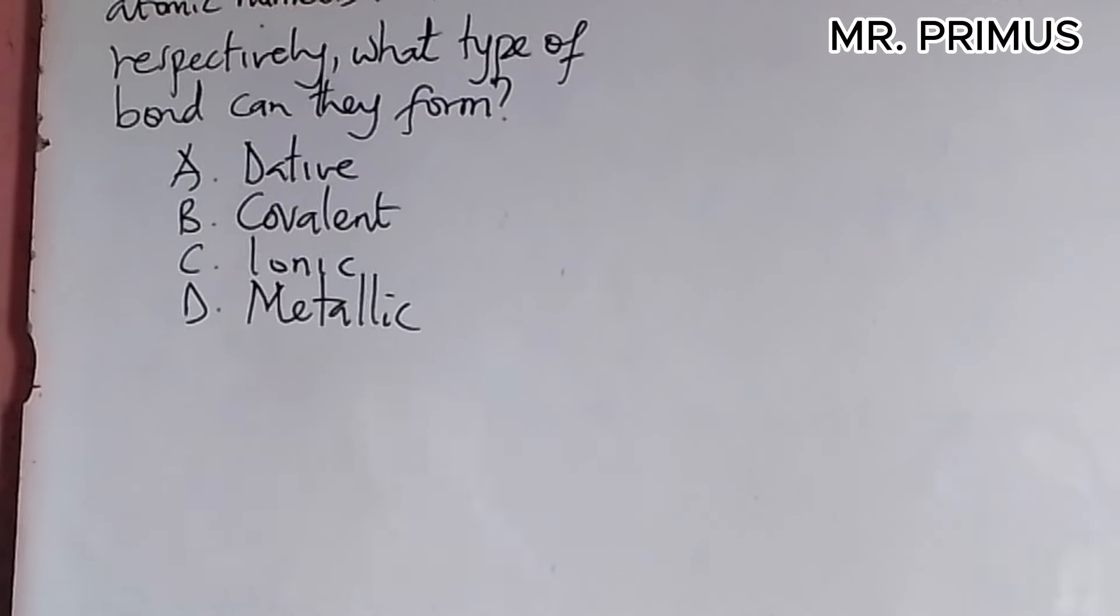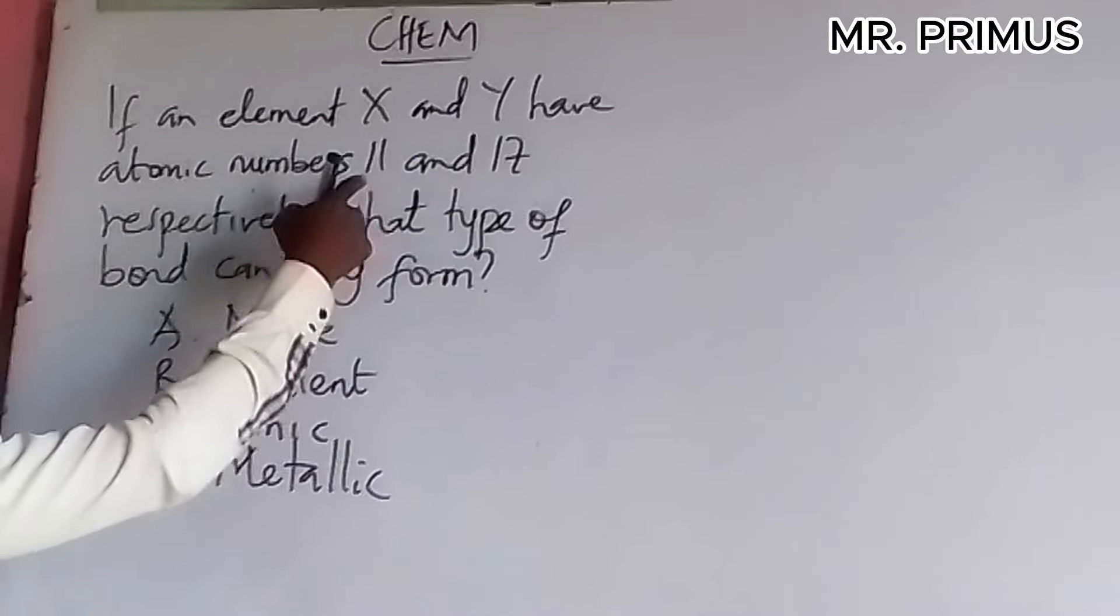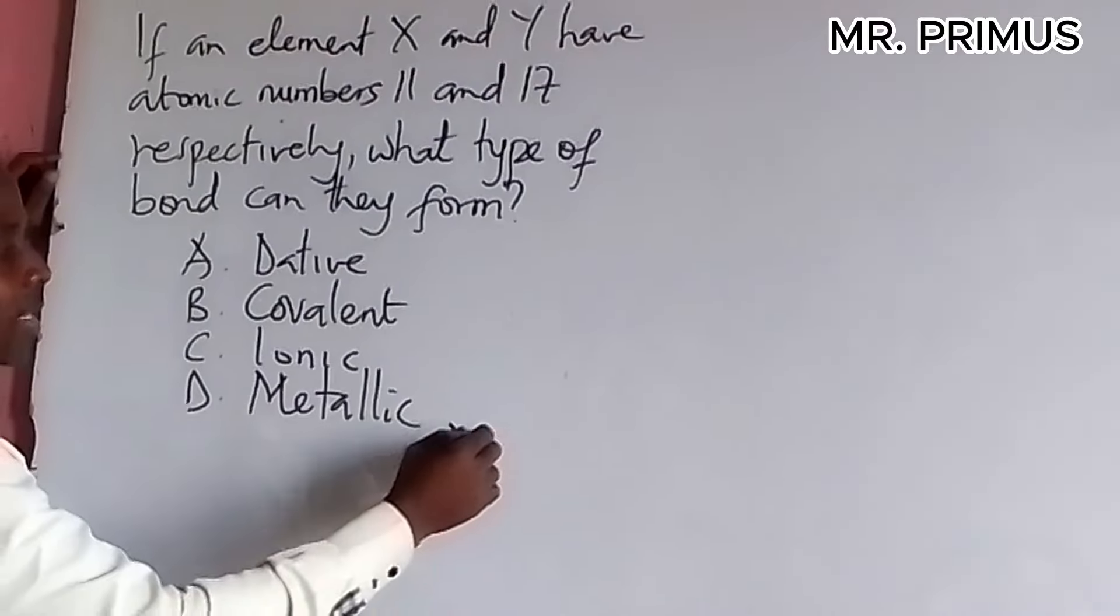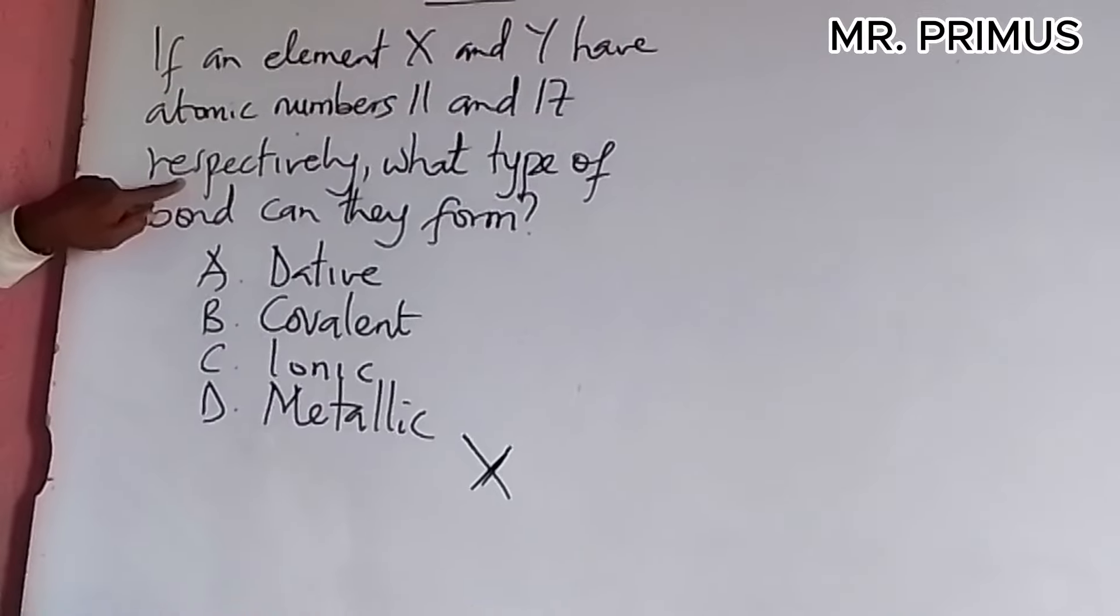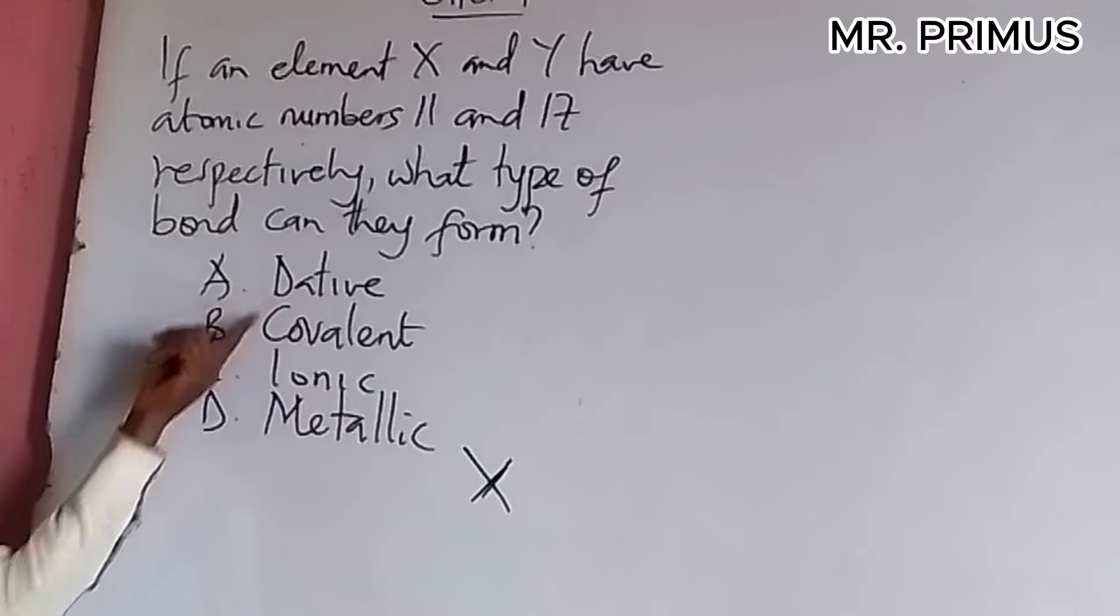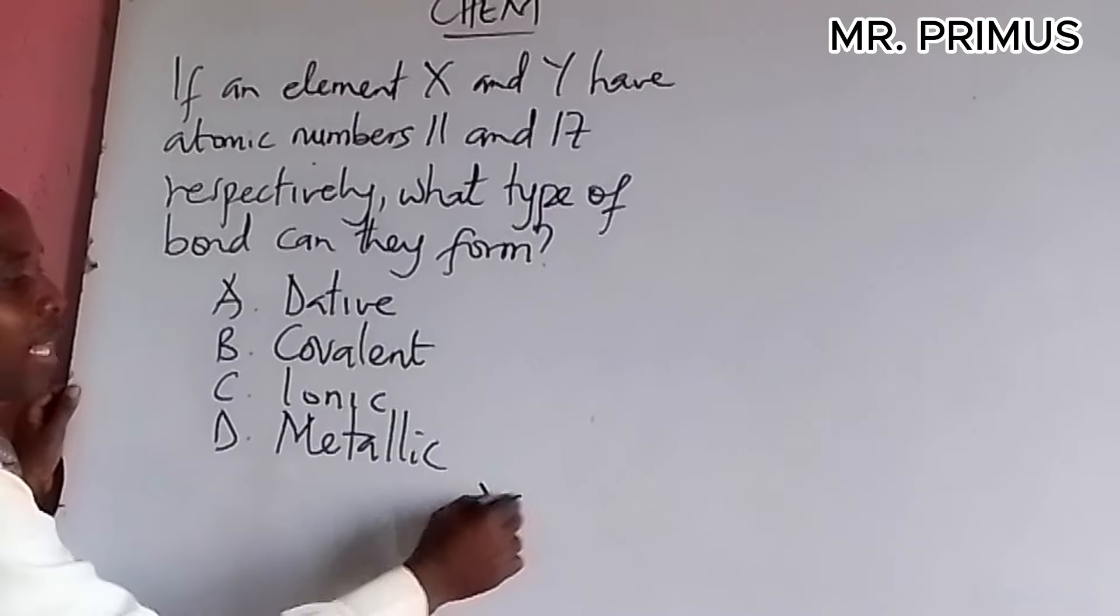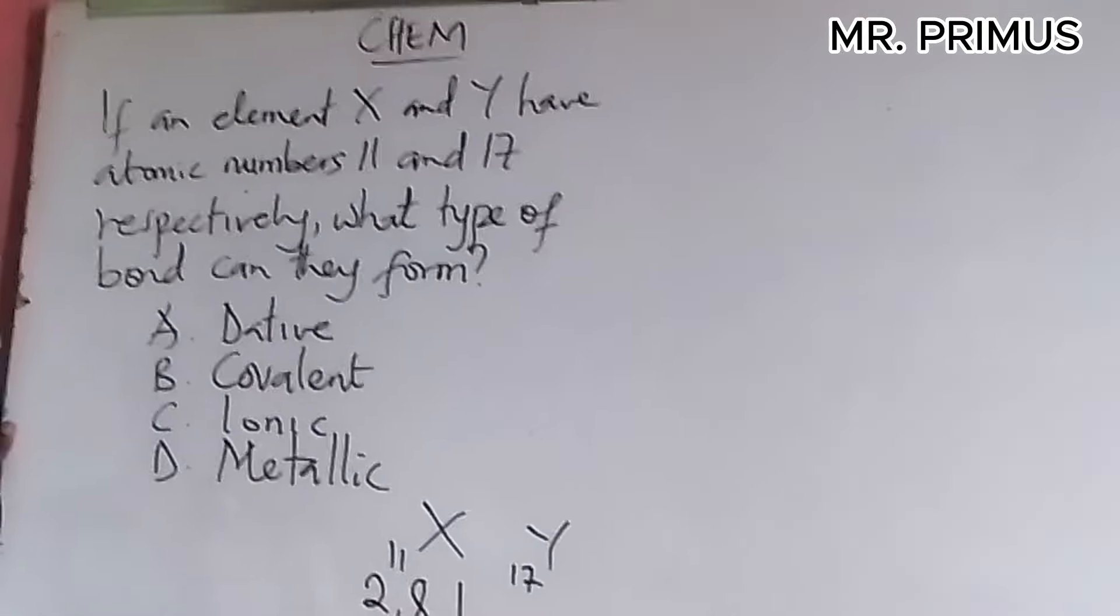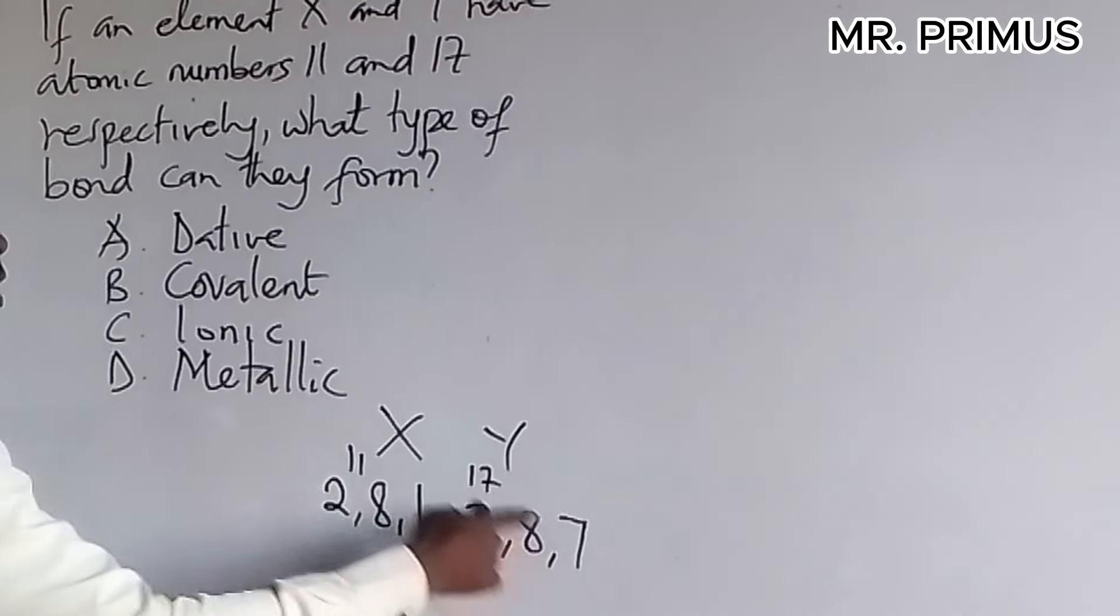Okay let's look at this question. This question is more or less like the other one we did but it has different elements now. So we are going to use duplet and octet configuration, that is the 2-8 configuration, to do this. So, look at these options: if an element X and Y have atomic numbers 11 and 17 respectively, what type of bond can they form? Is it dative, is it covalent, is it ionic, or metallic? So let's quickly come to this. X has atomic number 11, Y has atomic number 17. Configure X: 2, 8, 1. 2 plus 8 plus 1 is 11. Configure 17: 2, 8, 7. 2 plus 8 plus 7 is 17.